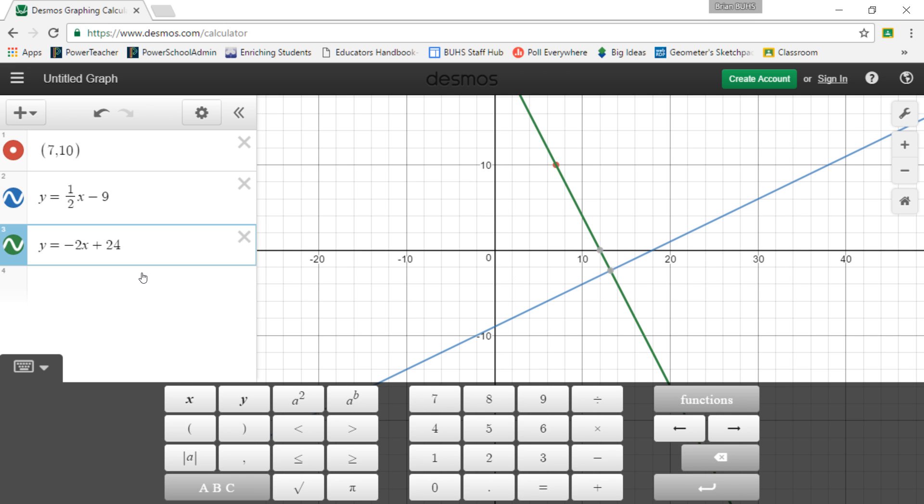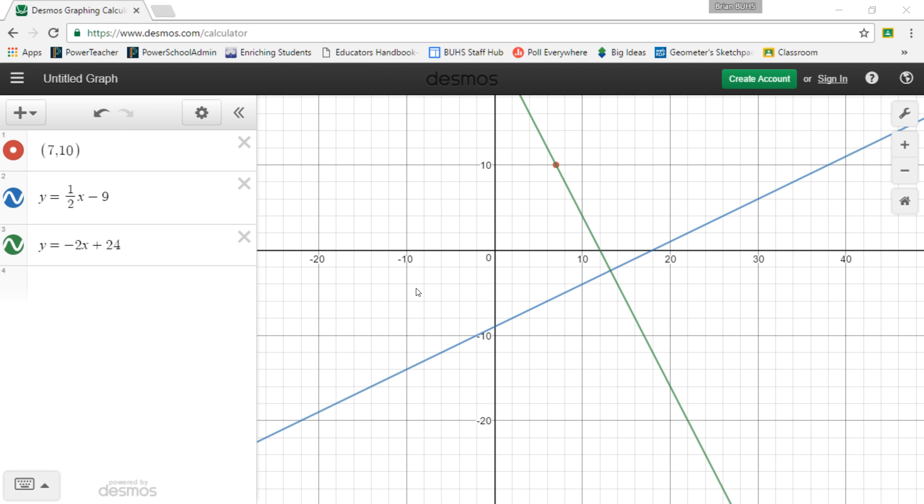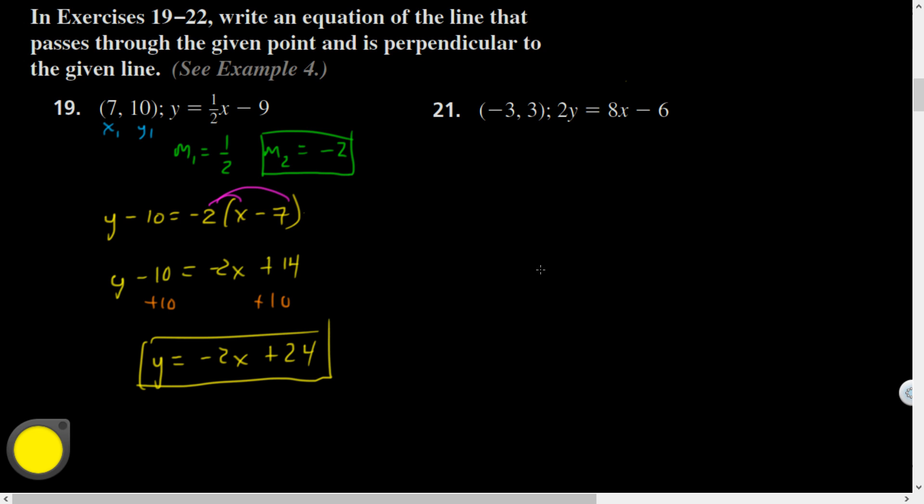So our line was Y equals negative two X plus 24. Bam! Nailed it! Did you see that? That is amazing, friends. Amazing.